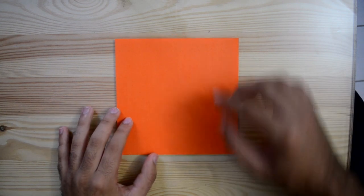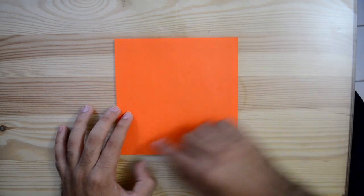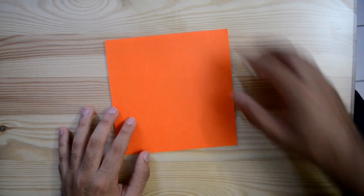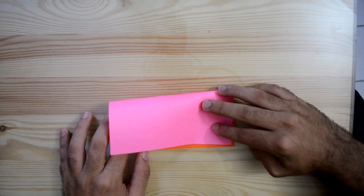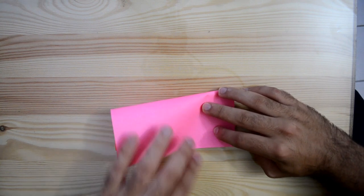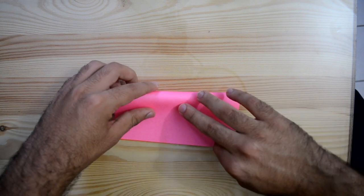And we're going to fold this over the bottom of the paper. The first step is we're going to make the crane base.